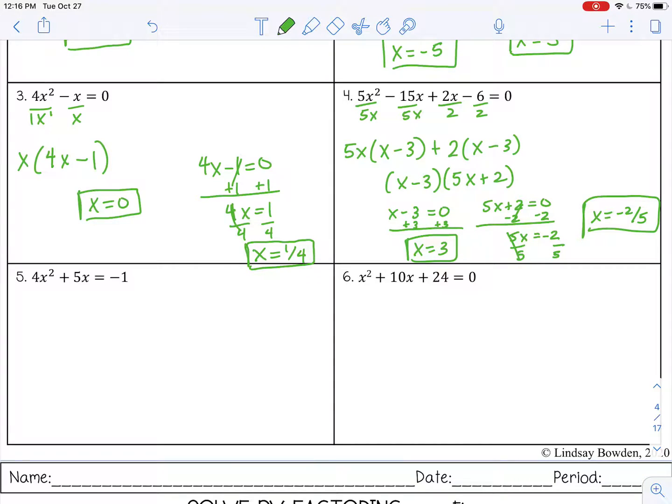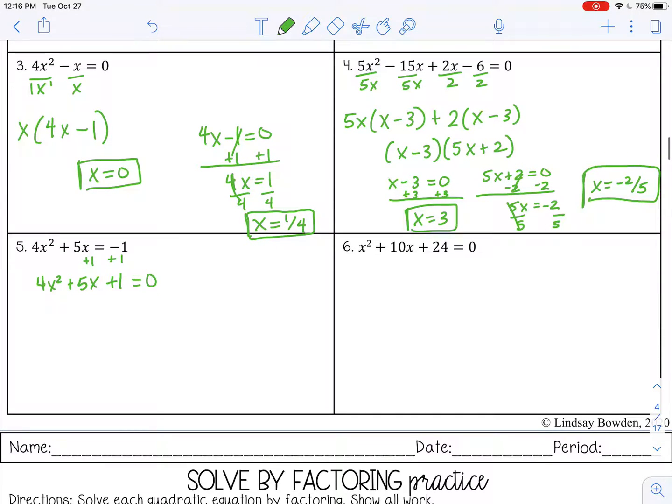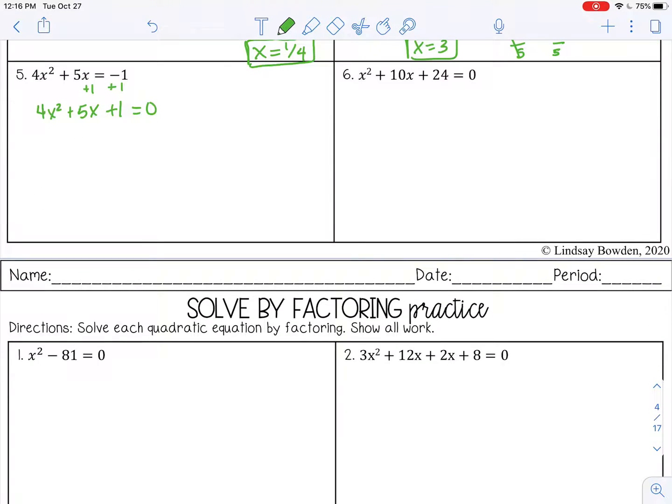Number five. First of all, this one is not equal to zero, so I need to make sure it's equal to zero first. I'm going to add this one to the other side. Don't try to combine it with that 5 or that 4, they are not like terms. I'm just going to add it to the end. Now it's equal to zero. Now I can factor. I'm going to multiply a by c.